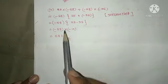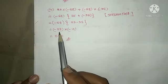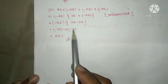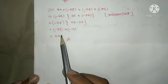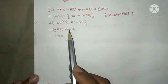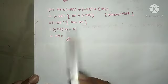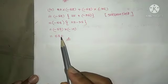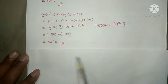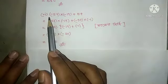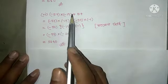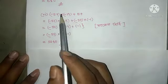Minus 58 into minus 10: minus times minus gives plus, 58 into 10 is 580. So the answer is 580.